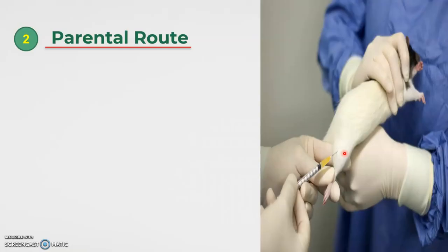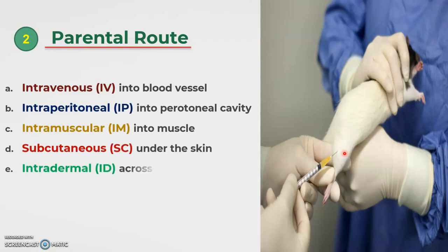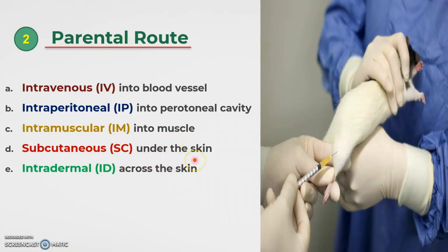Now let us discuss the parenteral route. Parenteral routes include: intravenous (into blood), intraperitoneal (into the peritoneal cavity), intramuscular (into the muscles), subcutaneous (under the skin), and intradermal (into the dermis layer). Unlike the oral route, the injection is directly administered into the vein, peritoneal cavity, skin, or muscles.